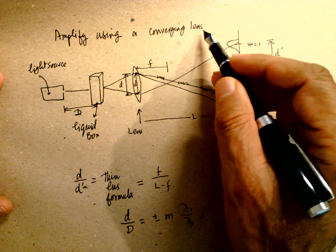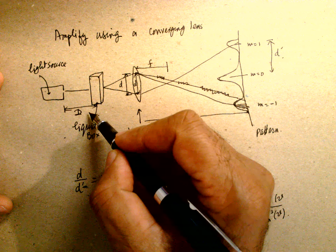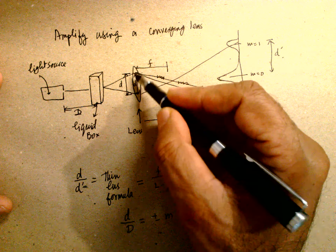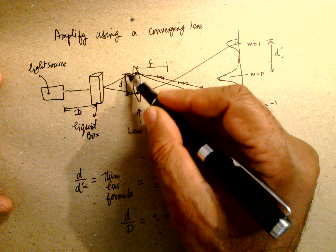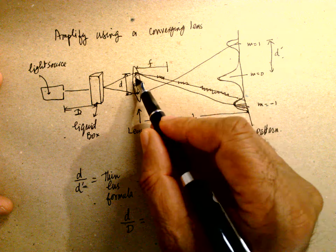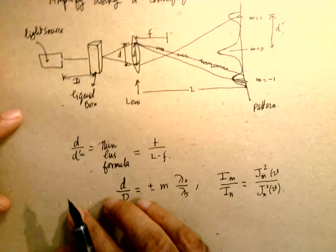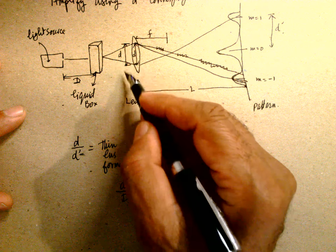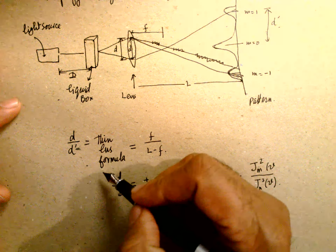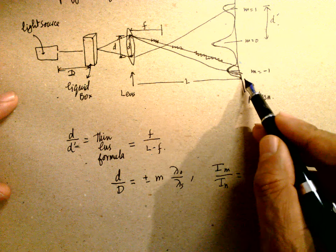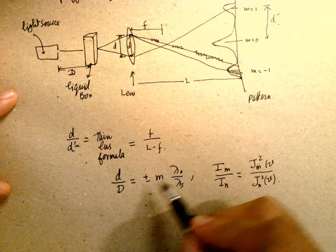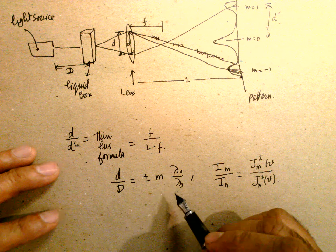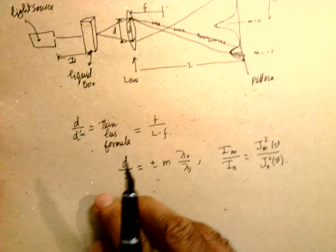The diffraction pattern is amplified using a convex lens. The light source passes through the liquid at distance D, then through the lens. The edge spacing of the lens and the thin lens formula are applied. The intensity variation gives d/d' where d' is the separation between two maxima at the lens. Using the thin lens formula, d/d' = f/l, where l is the distance from the lens to the screen and f is the focal length. This configuration provides higher resolution.